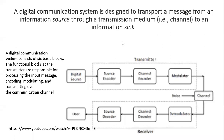So till now, whatever we have studied in this digital source — I am revising again because this can come as an MCQ question — is how we have converted an analog signal into a digital signal using the techniques PAM, PWM, and PPM. After that, we converted it in the source encoder with the help of PCM, Pulse Code Modulation.